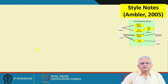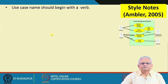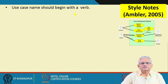Based on the discussion so far, let us look at some style notes recommended by Ambler in 2005 in his book. These style notes are about developing good quality UML diagrams. The first thing to note is that all use cases should be named with a verb form — for example, register student, register courses, course registration, etcetera. The functionality documented here are essentially activities and should appear in verb form.